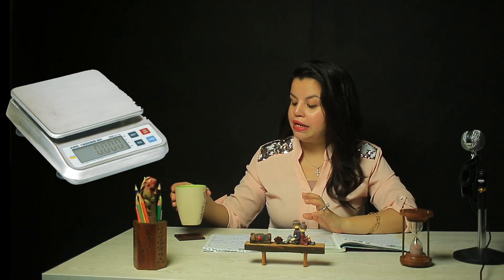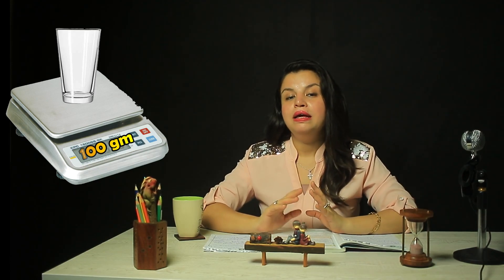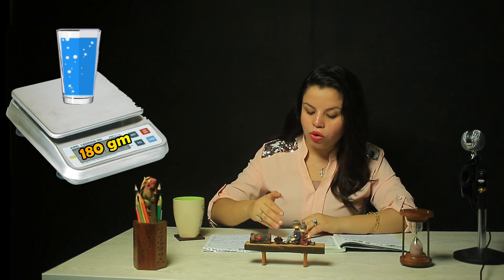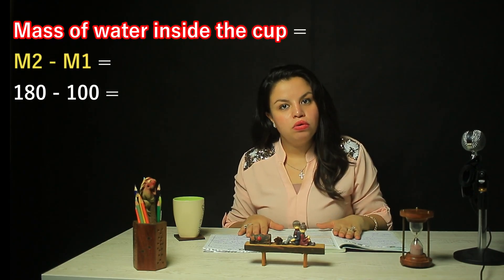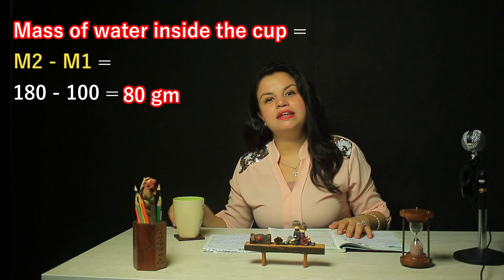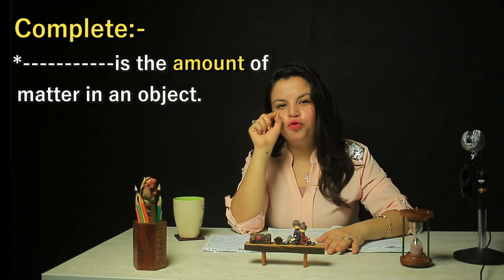We place the empty cup on the digital scale and read the number — for example, 100 grams. Then we put water inside the cup and place it on the digital scale again. It reads, for example, 180 grams. The mass of the water is 180 minus 100, which equals 80 grams.